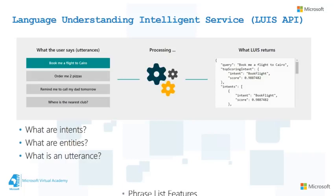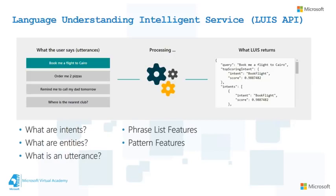While building your LUIS app, you may use the phrase list features and pattern features to improve LUIS performance in detecting entities and intents. The phrase list feature is a list of values falling under a relevant entity — for example, a city list containing Cairo, Paris, London, New York. Once LUIS detects one of these values, it treats the others similarly, so you can train with one value and it applies to others. The pattern feature is like a regular expression — for example, a pattern for a flight number. Using phrase list and pattern features may improve the performance of your LUIS app.